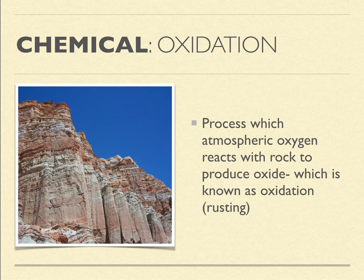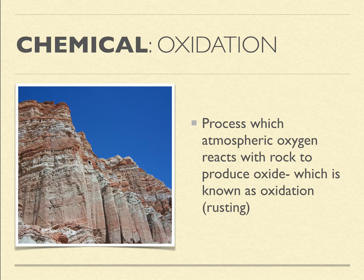Here's an example of chemical weathering — oxidation. This is a photo I took of Red Rock Canyon in Cantil, California. We have beautiful stratigraphy that's been exposed, with very rich layers of grays, whites, and reds. Oxidation is the process of atmospheric oxygen reacting with the rock to produce an oxide — essentially rusting.